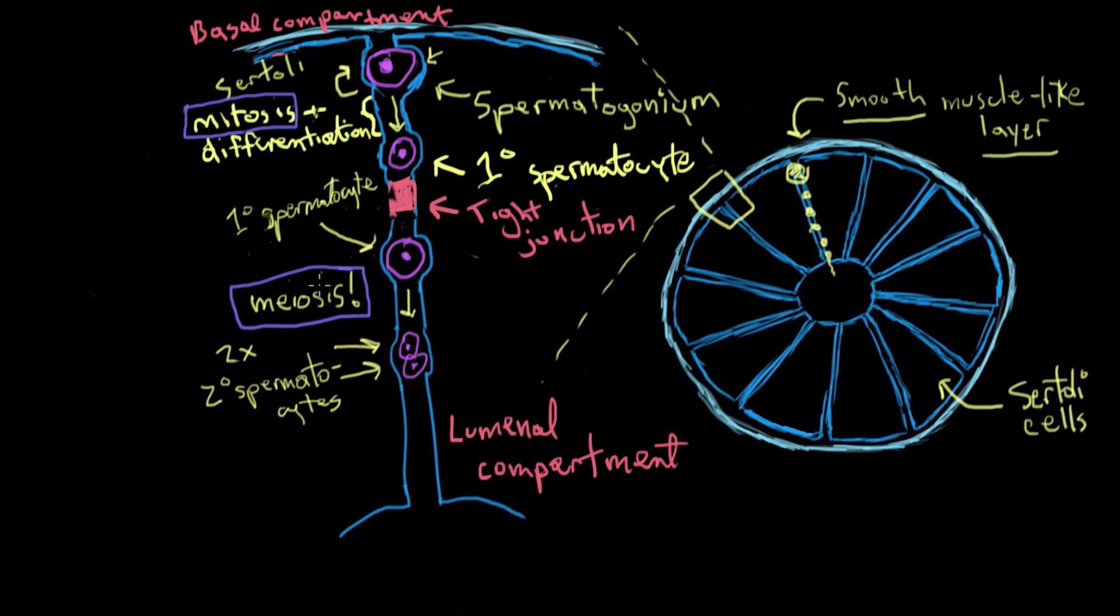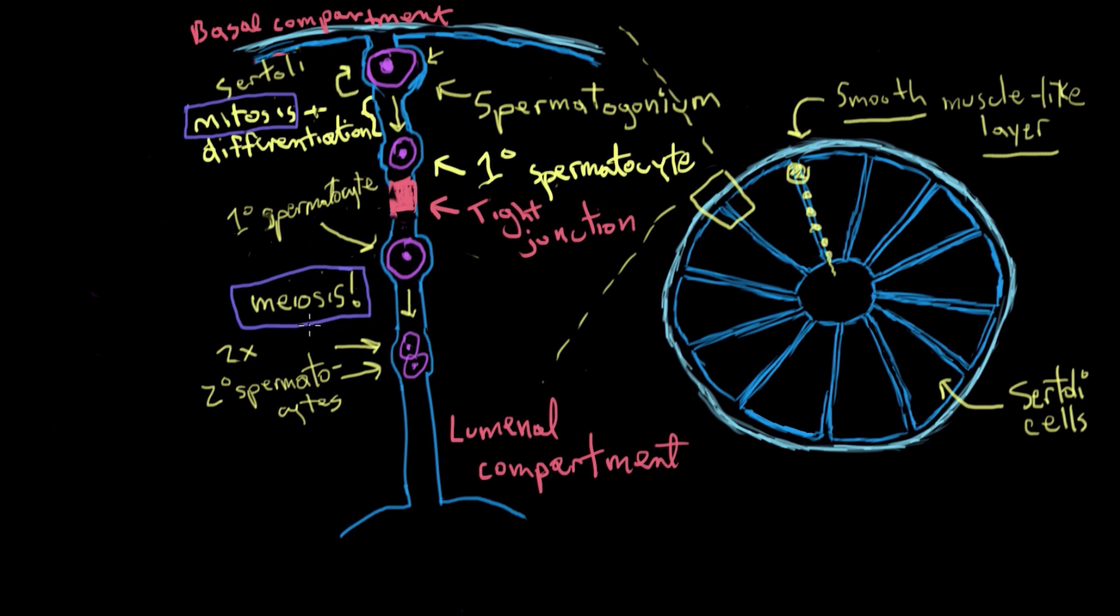But in meiosis, you give each of your daughter cells half of your chromosomes. So the primary spermatocytes have 46 pairs of chromosomes. And when they differentiate into secondary spermatocytes, they give each secondary half of those 46 pairs. So the secondaries end up with 23 pairs of chromosomes. So now what happens? We have our secondary spermatocytes with each having 23 pairs of chromosomes. And now they need to differentiate.